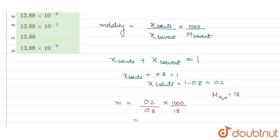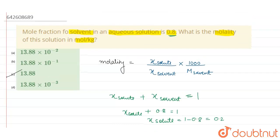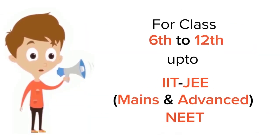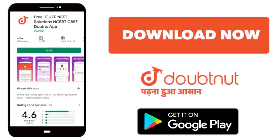After solving this, the answer that we will get is 13.88 mole per kg, or 13.88 molal solution. So this is the final answer of our question, and from the given options, option C is correct. Thank you. For class 6 to 12, IIT-JEE and NEET level, trusted by more than 5 crore students. Download Doubtnut app today.